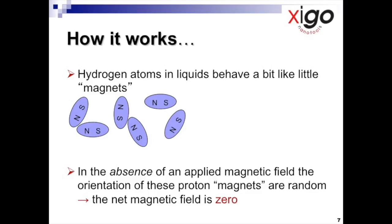In the absence of an applied magnetic field, the orientation of these proton magnets are random, and so the net magnetic field is, of course, zero.